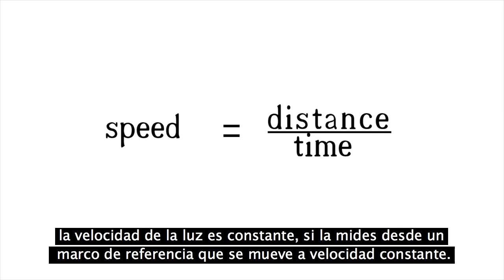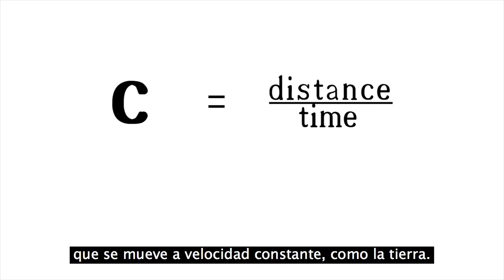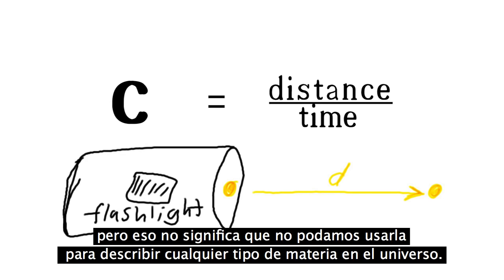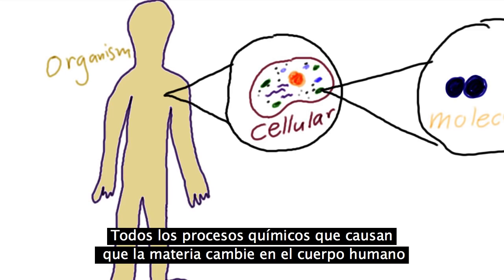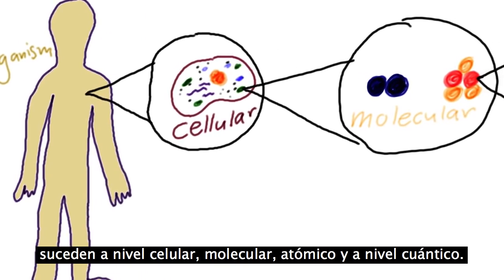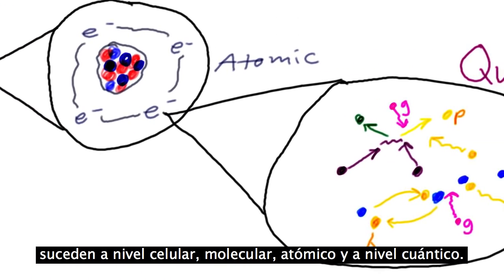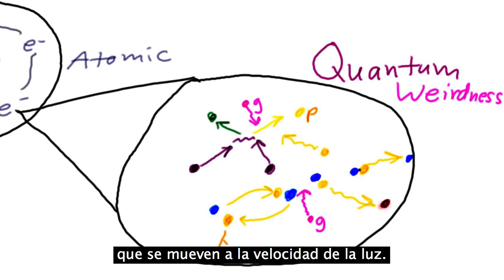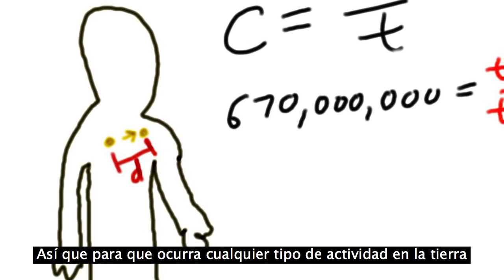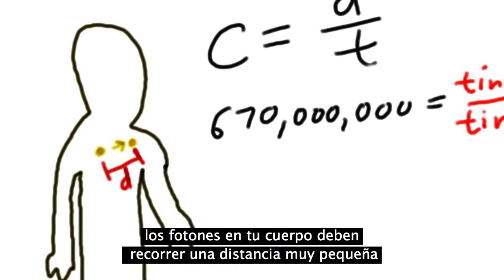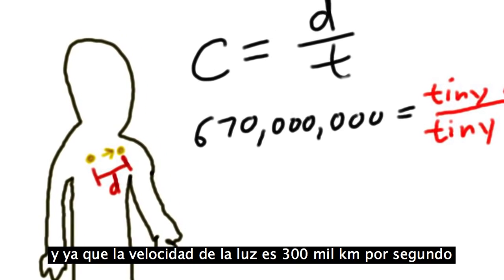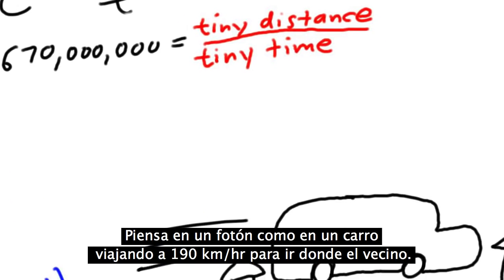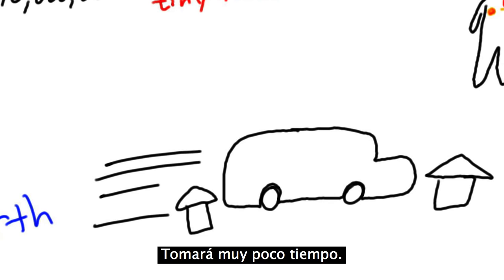It's all based on the equation speed equals distance over time. When we use this equation to describe light, the speed of light is constant, as long as you are measuring it from a reference frame moving at a constant velocity, such as Earth. All the chemical processes that cause matter to change and the human body to think, breathe, and age happen on a cellular level, a molecular level, an atomic level, and ultimately a quantum level, where everything is the result of forces carried out by photons, gravitons, and other fundamental particles which move at the speed of light. Think of a photon like a car traveling at 120 miles per hour just to get next door — it's going to take a very short amount of time.